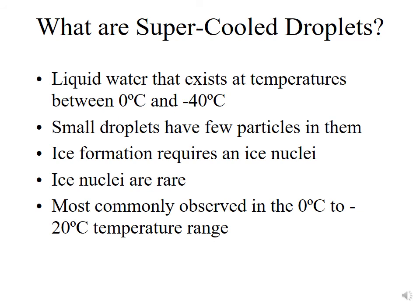What are these supercooled droplets we keep talking about? It's liquid water that exists at temperatures between 0 degrees Celsius and minus 40 degrees Celsius. If you fill an ice cube tray with water and put it in the freezer, you expect it to be frozen 12 hours later, because there are plenty of ice nuclei in the water or the tray itself can act as an ice nuclei. But when you divide that water into thousands of individual small cloud droplets, each may or may not have an ice nuclei — the more droplets you get and the smaller they become, the less likely they'll have an ice nuclei. Because ice nuclei are rare, supercooled droplets are actually very common.